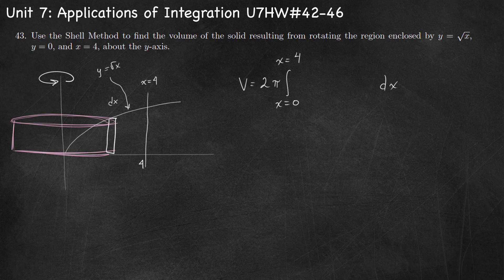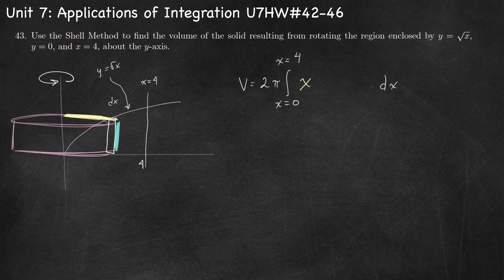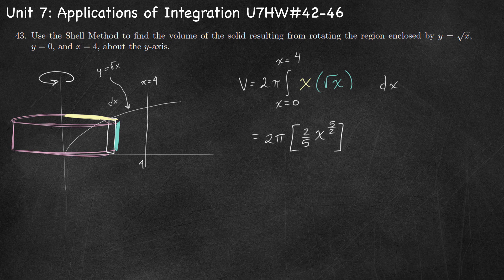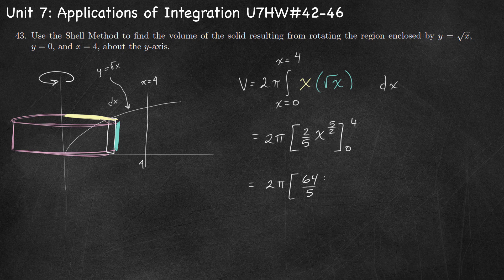We need radius times height. The radius of the cylinder is this horizontal distance, which is just x. The height of the cylinder is this vertical distance — top minus bottom. The top of the rectangle is y equals square root of x, and the bottom touches y equals 0, so it's just square root of x. x times square root of x equals x to the 3/2 power. Integrating gives x to the 5/2 times 2/5, evaluated from 0 to 4. 4 to the 5/2 is 2 to the 5th, which is 32. 32 times 2 is 64 over 5, so the final answer is 128 pi over 5.